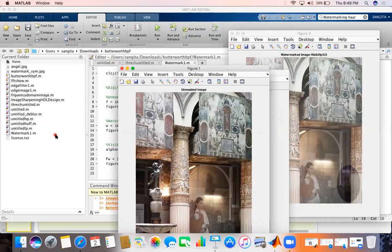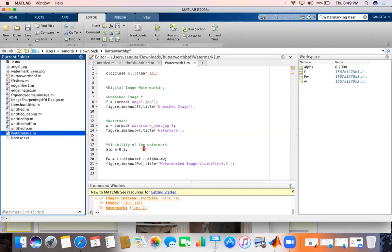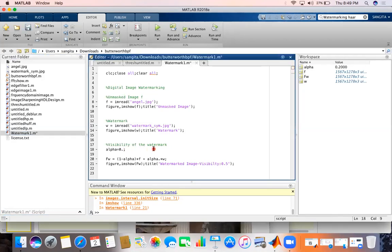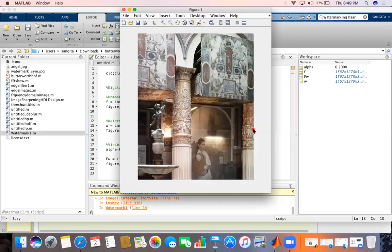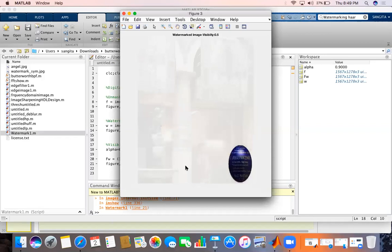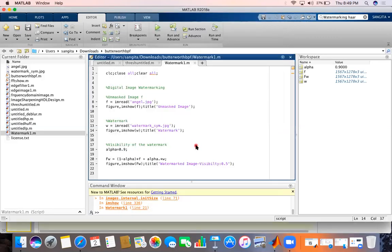I can also make this alpha as 0.9. How it is changing, see. So now image is totally invisible, watermark is there. So by controlling this, the visibility of the watermark or the main image visibility can be changed. So it is known as visible image watermarking.